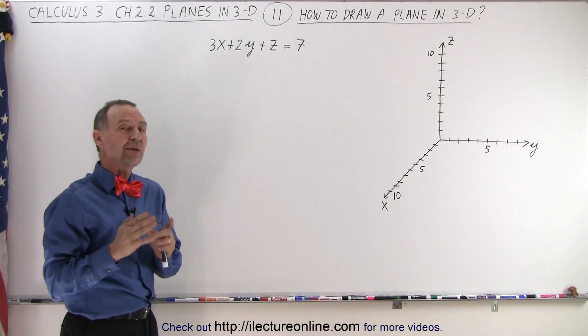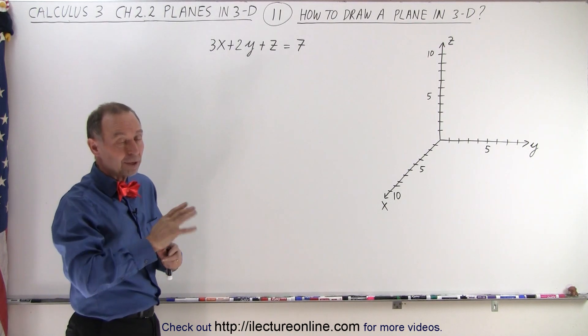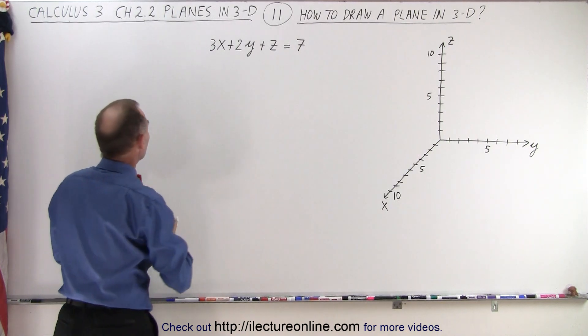To do that, you're going to take two of the three variables at a time, and there's three of those combinations, and set them equal to zero.